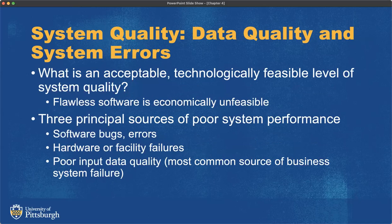System quality: data quality and system errors. What is an acceptable and feasible level of quality? Perfectly flawless operating software is just never going to happen — by the time you developed it, the software would be irrelevant or cost so much that no one could afford it. You know you're going to release software with bugs in it — you plan for it and release a list of known issues. The three principal sources of poor system performance are: software bugs and errors, hardware or facility failures, and garbage in, garbage out — poor input data quality means you get poor output.